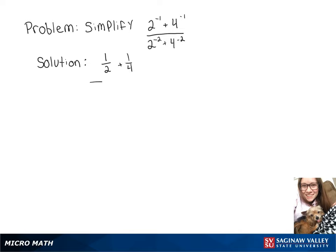We've got all of that over 1 over 2 squared, which is 1 over 4, plus 1 over 4 squared, which is 1 over 16.